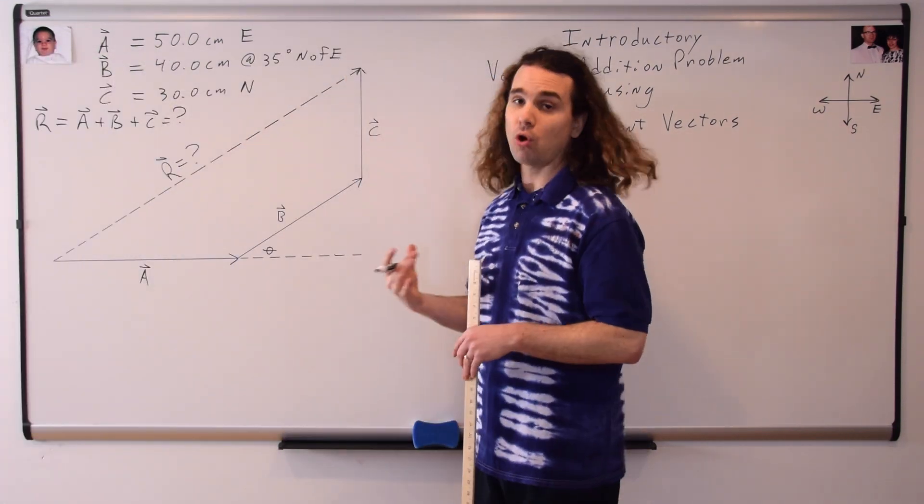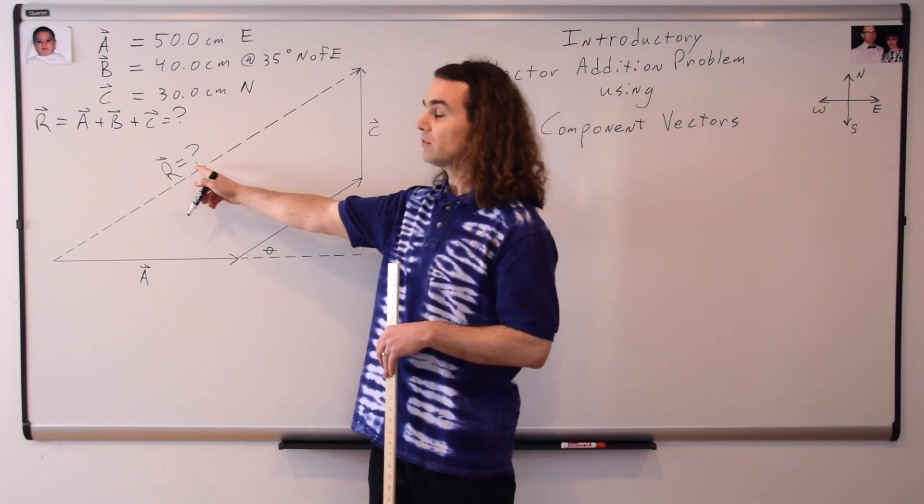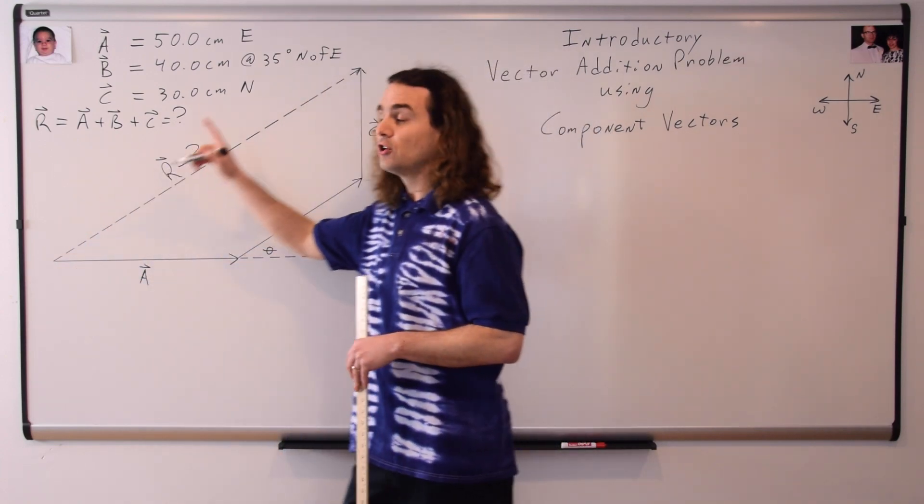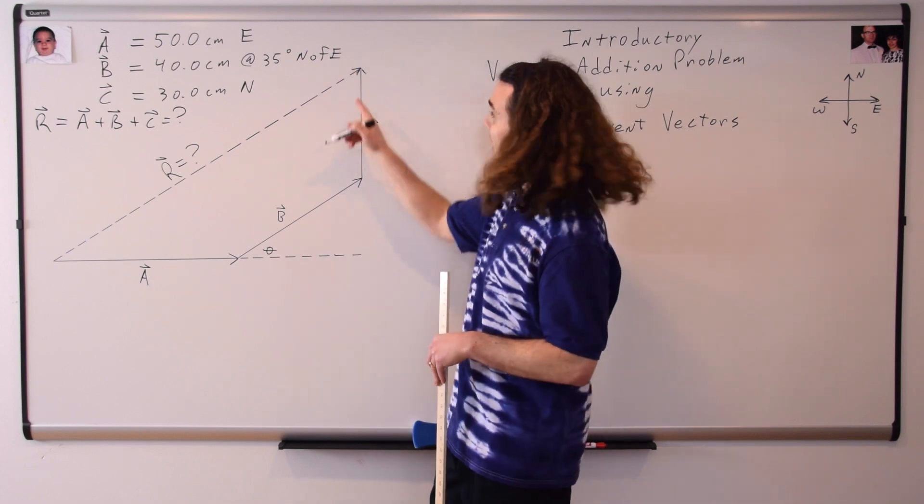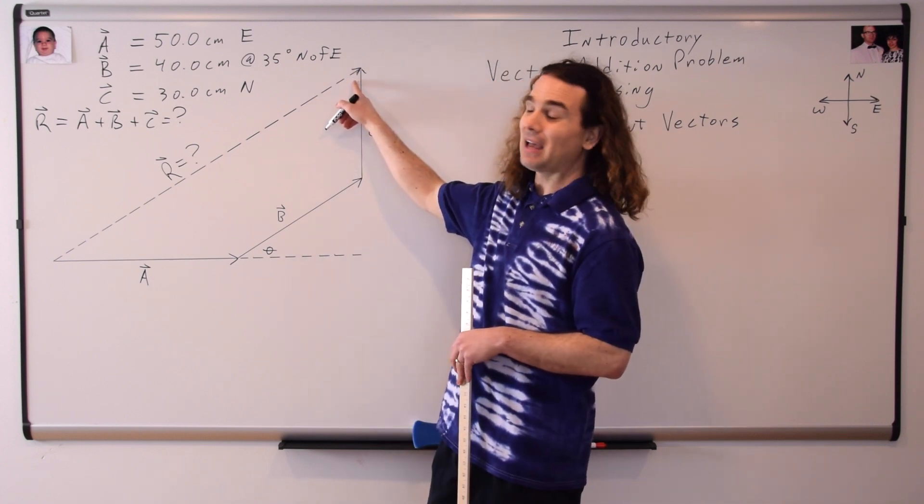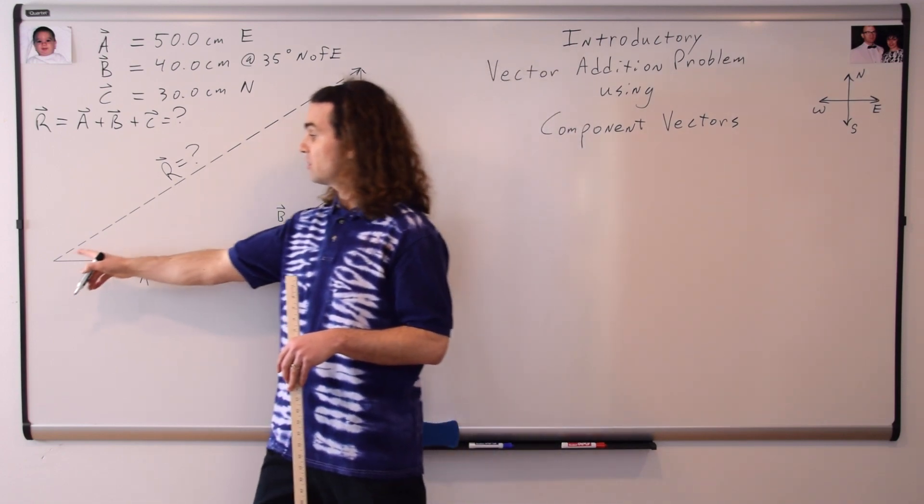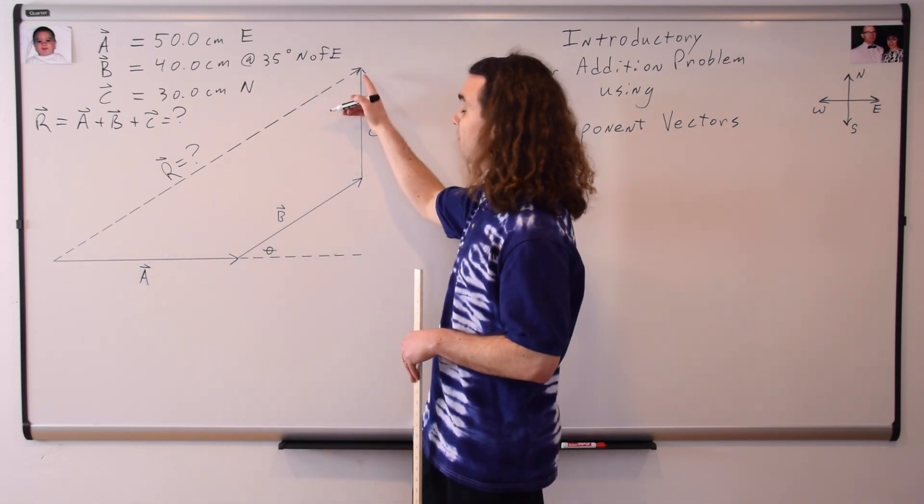We are looking for the total displacement, which is this resultant vector R, which is the displacement from the initial point to the final point. And the arrowhead goes right here on the final point, again, because this arrow indicates the direction of the total displacement, which is from the initial point to the final point.